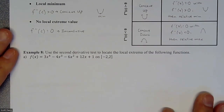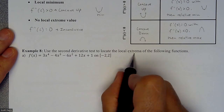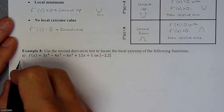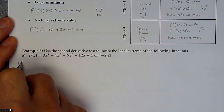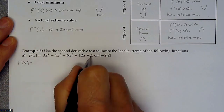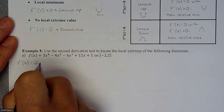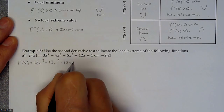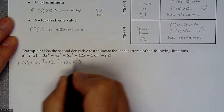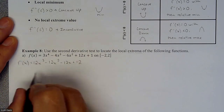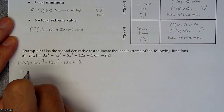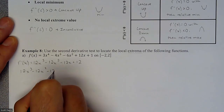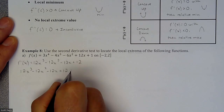So let's use that information and apply the second derivative test to figure out where our local extrema are. First, we're going to take the derivative of the function, which gives us 12x³ minus 12x² minus 12x plus 12. We still need our critical numbers, so we'll take this and set it equal to zero.